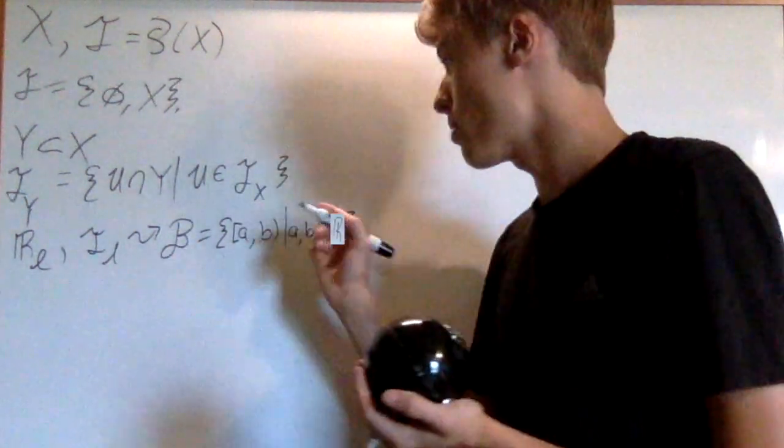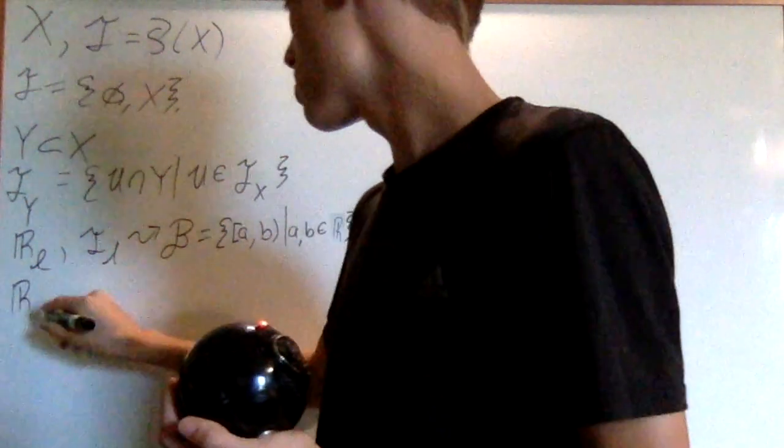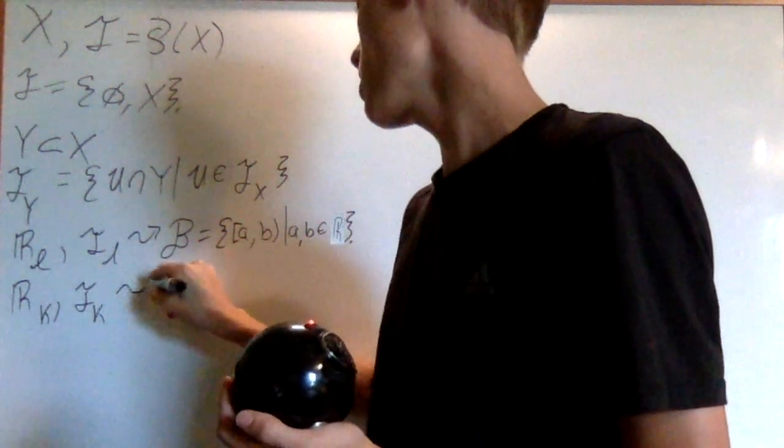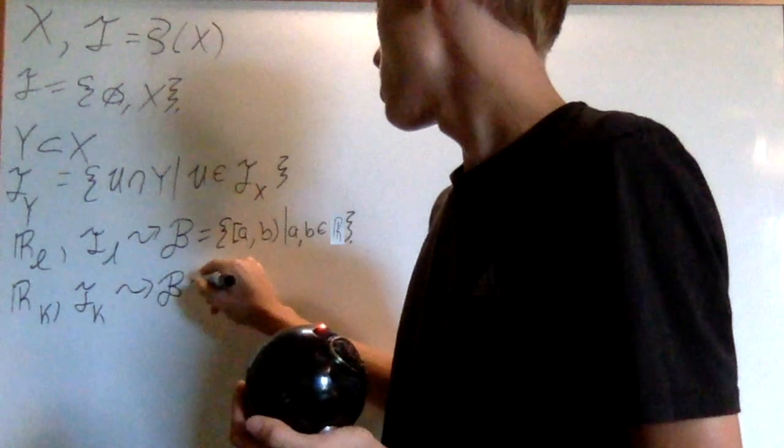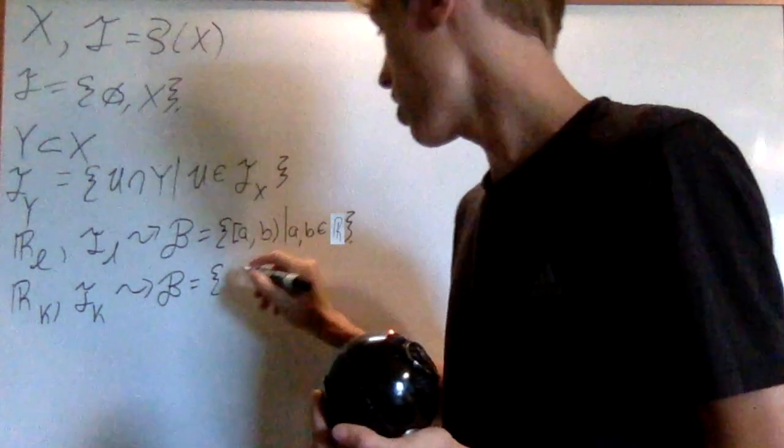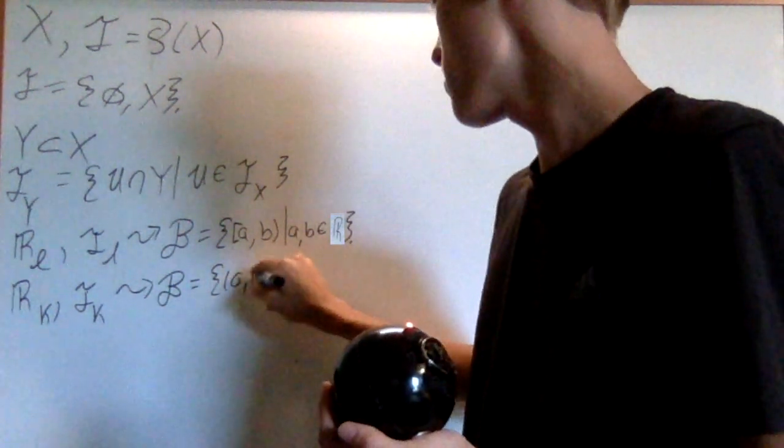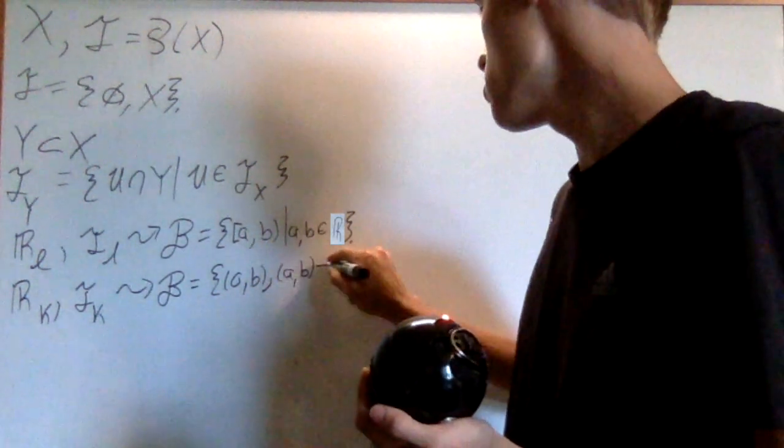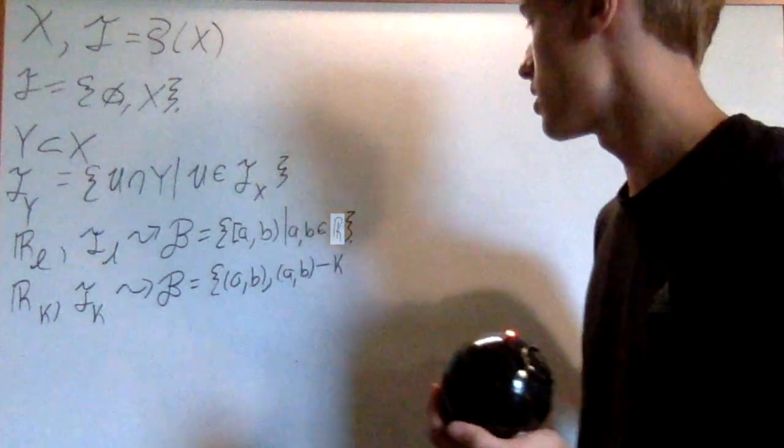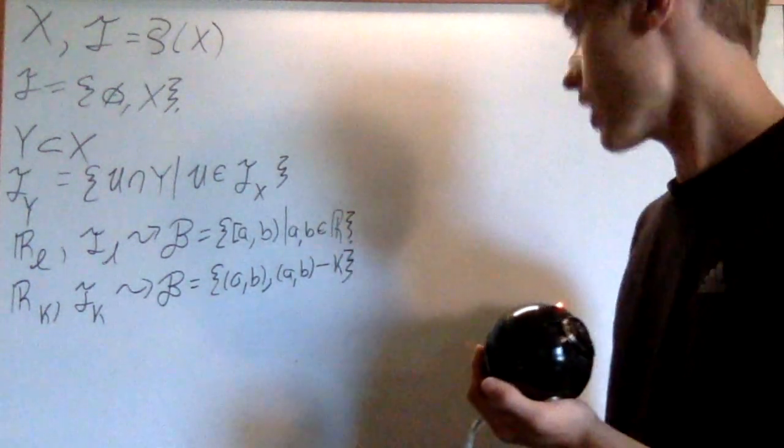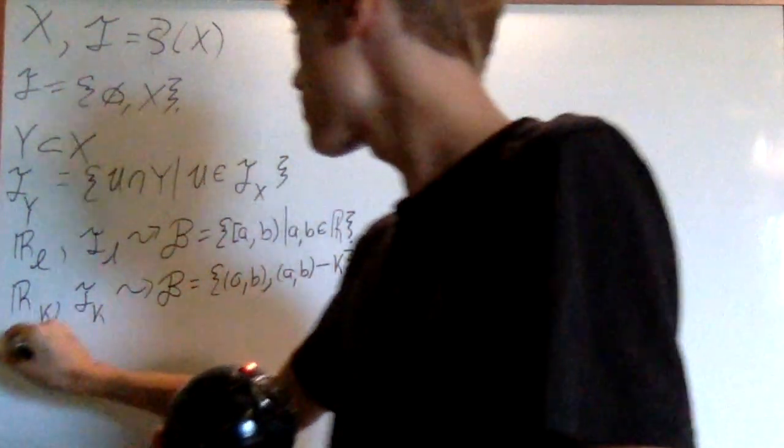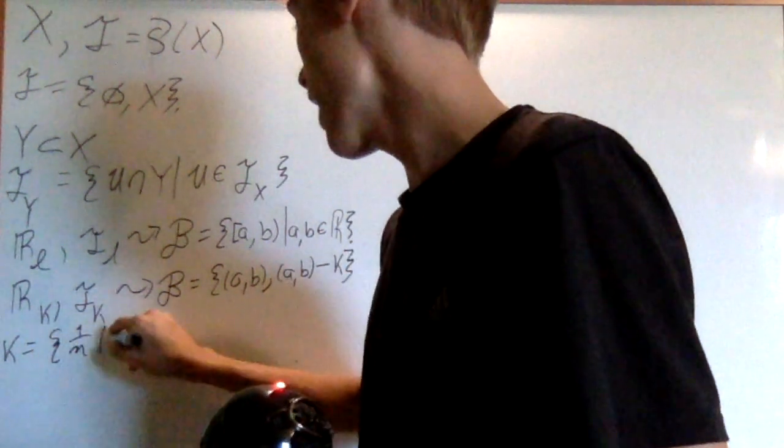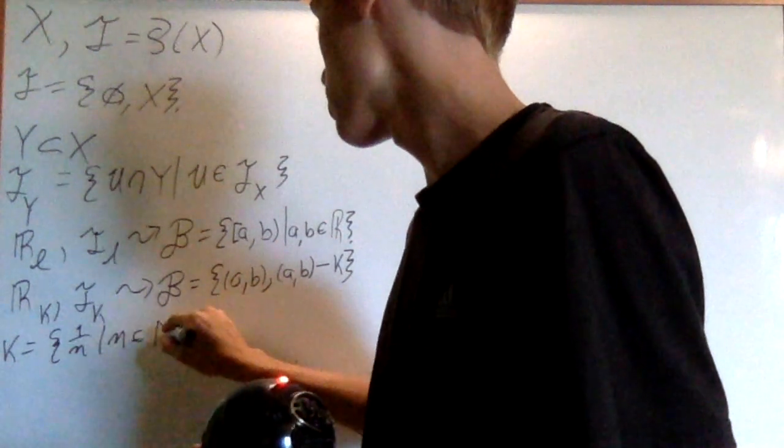And another topology on R is usually called R_K, I'll call it T_K, and it's going to be generated by the basis, which is the set of open intervals AB, as well as open intervals AB, removing a special set. Now I'll define what that special set is right now. This special set is the set of 1 over N for every N an element of the natural numbers.